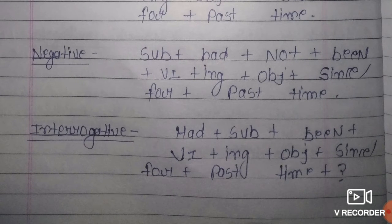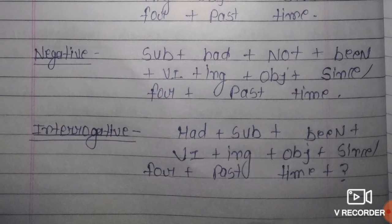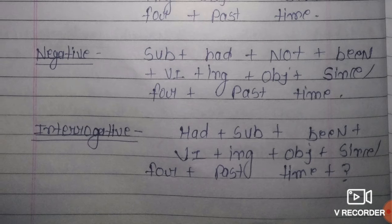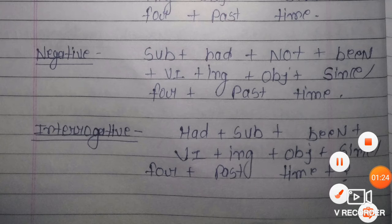Interrogative sentence mein: Had + subject + been + verb ki first form + ing + object + since/for + past time + question mark. Interrogative mein vahhi helping verb pehle aayegi, uske baad subject ka use hota hai, phir been, verb ki first form ke saath ing, then object, since/for + past time, then question mark.